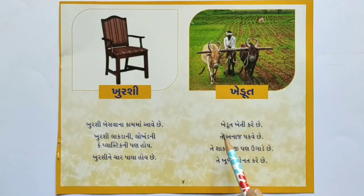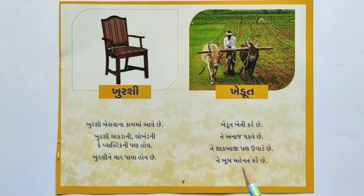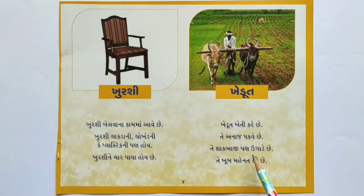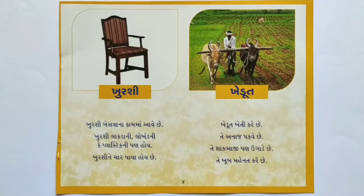ખુર્સીને ચાર પાયા હોય છે. ખૂબ સરસ! ખેડૂત - ખેતી કરે છે. તે અનાજ પકવે છે. તે શાકભાજી પણ ઉગાડે છે. તે ખૂબ મહેનત કરે છે. ખૂબ સરસ!